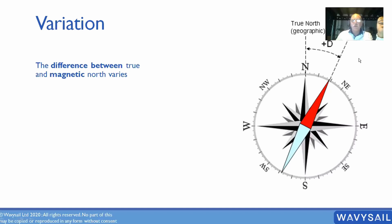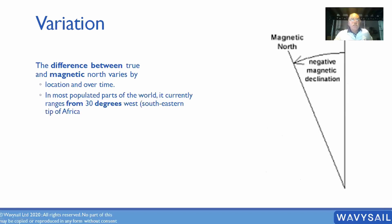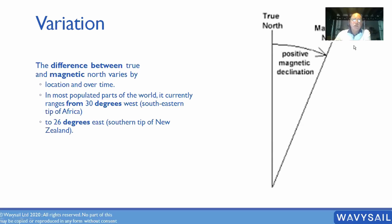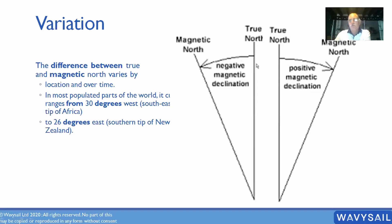Depending on where you are in the world and when you are, your variation will change all the time. In most populated parts of the world it currently ranges from about 30 degrees west to 26–30 degrees near New Zealand. So around the world you've got about a 60 degree difference. It could be positive or negative from true north — westerly variation or easterly variation.